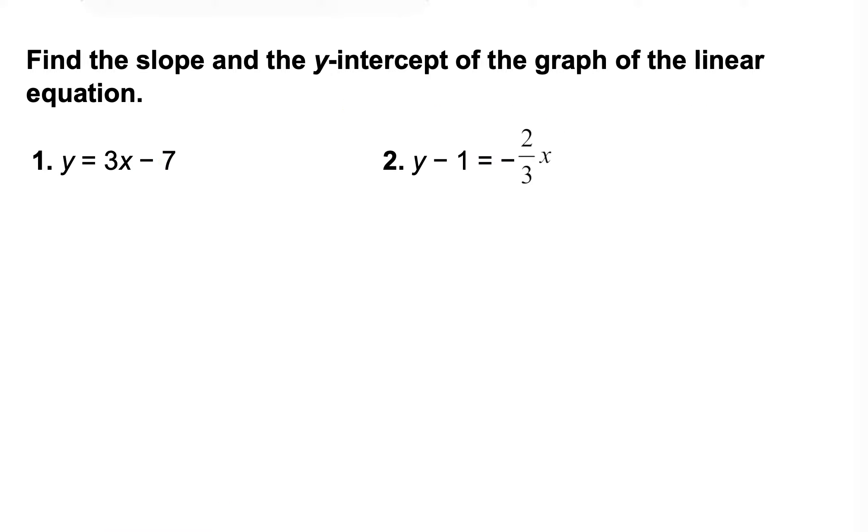Same type of problem. You have two more equations to try. Go ahead, take a minute and pause the video and write down your slope and y-intercept for these. Let's go ahead and double-check your answers. In this first one, it's already in slope-intercept form. Your slope, the number in front of the x, is 3. The y-intercept is negative 7. Make sure you pay attention to that minus sign and include that as part of your y-intercept.